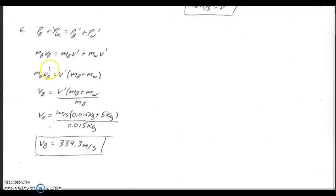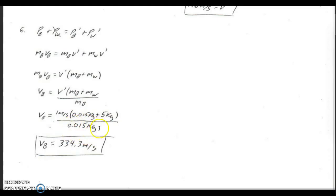We are solving for the velocity of the bullet. We have mass of the bullet times speed of the bullet equals the combined masses times velocity after the collision. We divide by the mass of the bullet to isolate the bullet's speed. The velocity after is 1 meter per second, the two masses together are 0.015 and 5 kilograms, and the mass of the bullet is 0.015 kilograms. Note that the masses do not cancel — there is a plus sign. When you put this into your calculator, you get the bullet's speed as 334.3 meters per second.